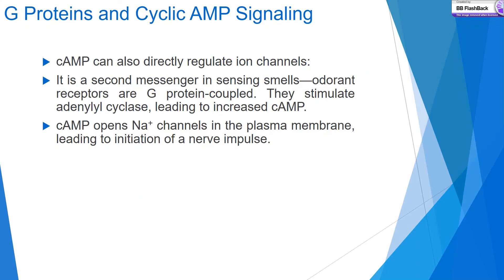cAMP can also directly regulate ion channels, functioning as a second messenger. In olfaction, odorant receptors are G-protein coupled; they stimulate adenylyl cyclase, leading to increased cAMP, which opens ion channels in the plasma membrane, initiating a nerve impulse.